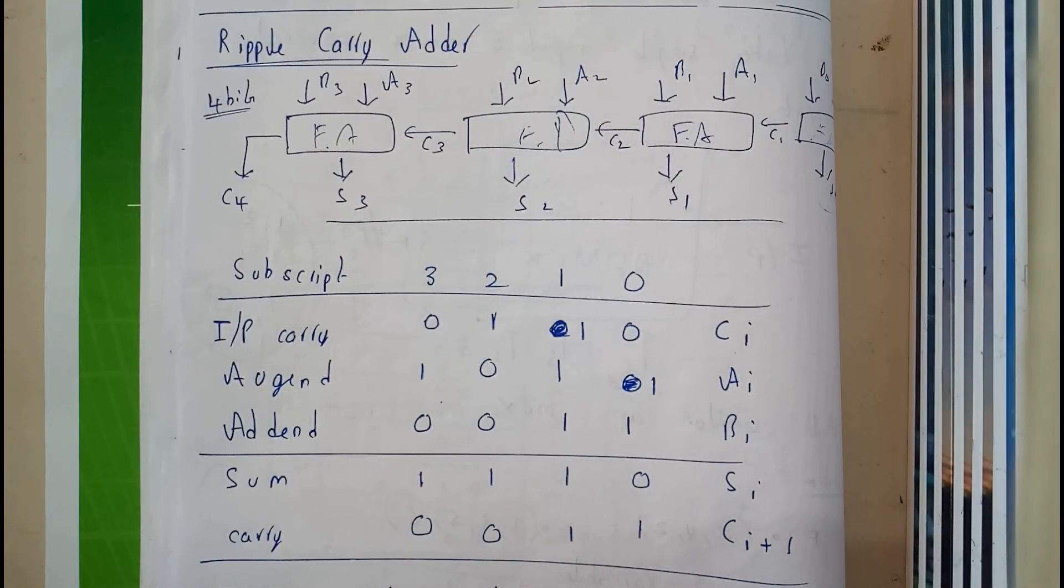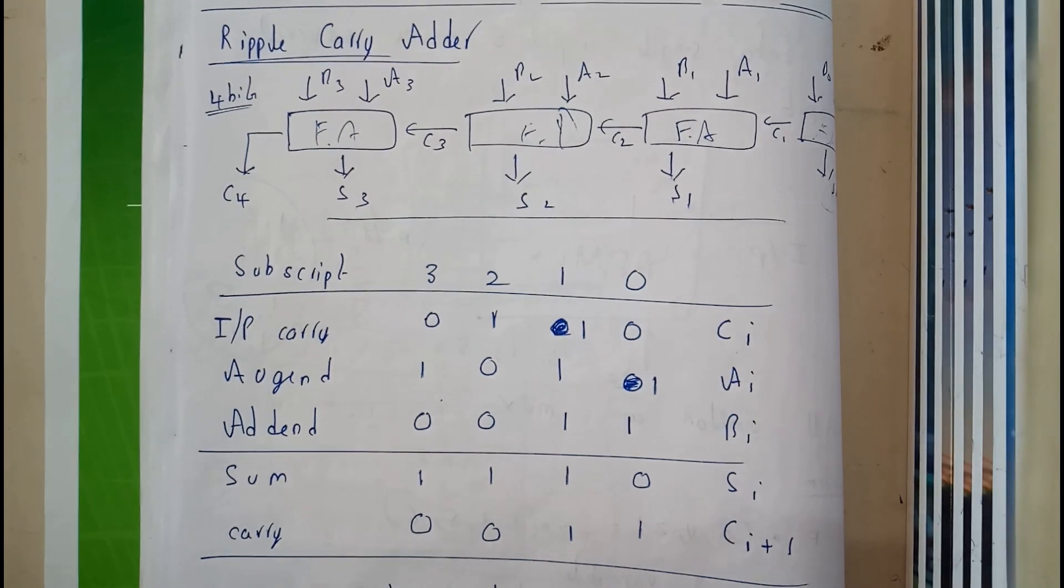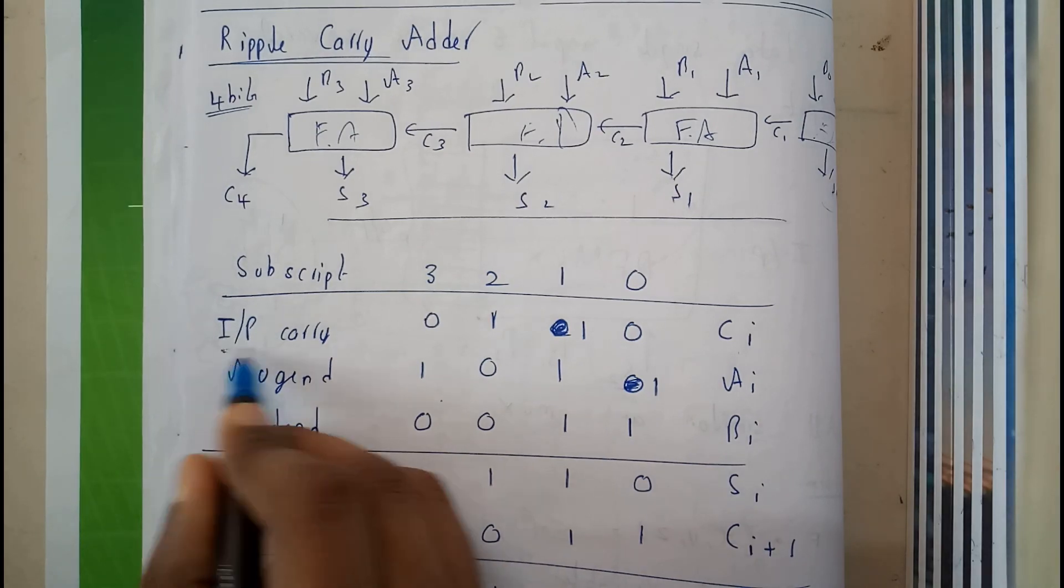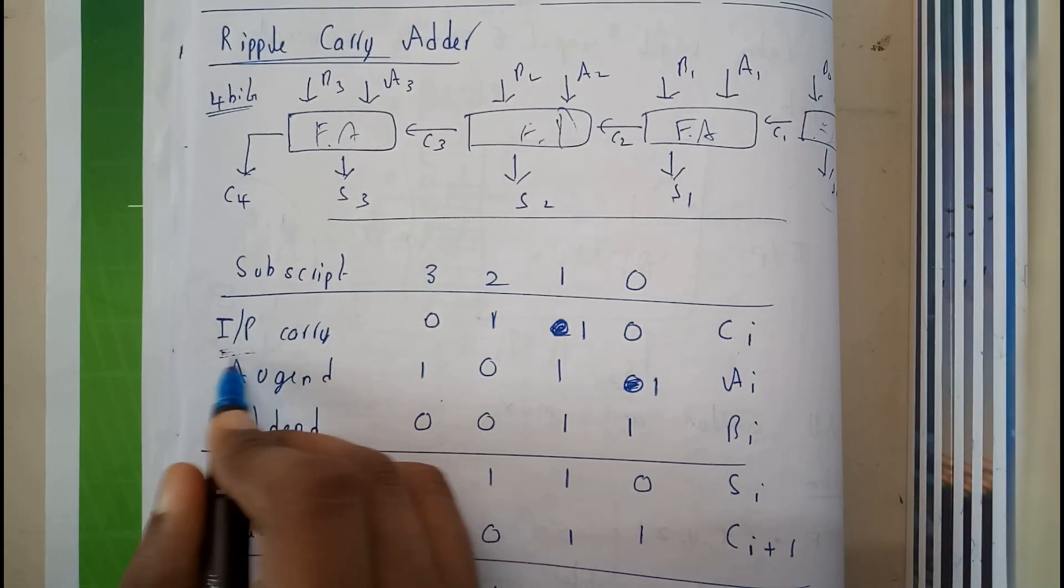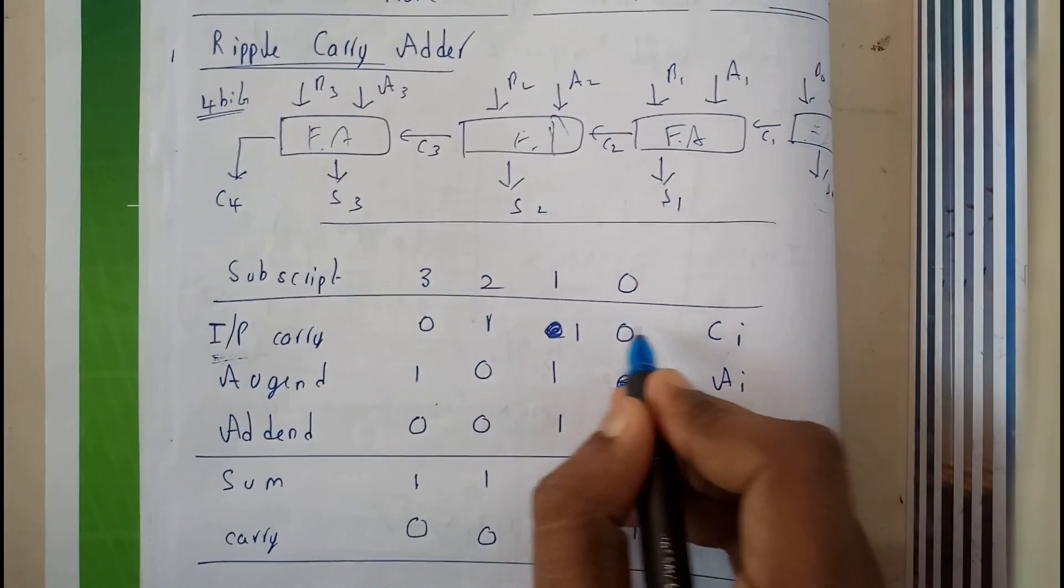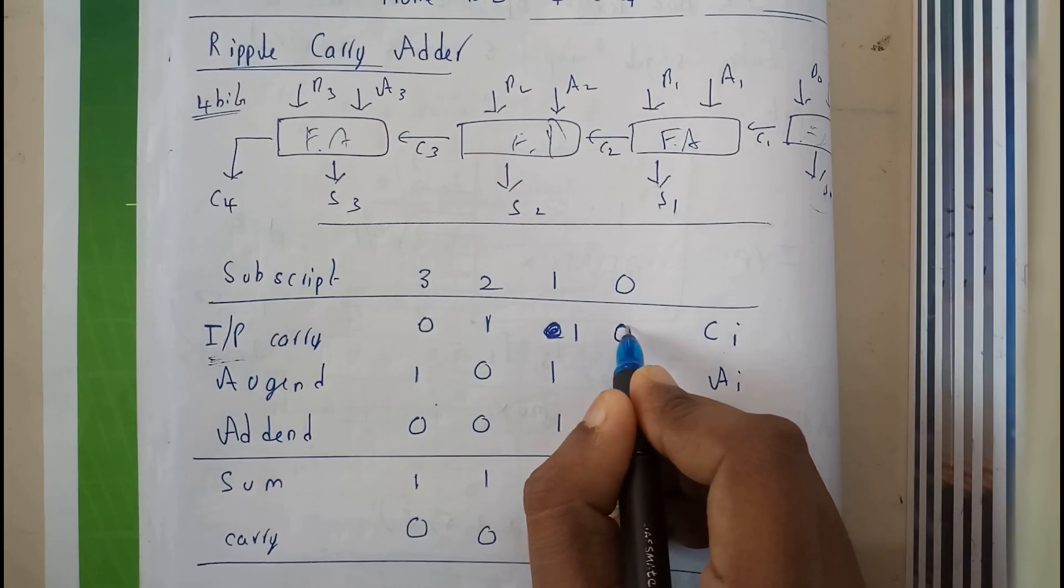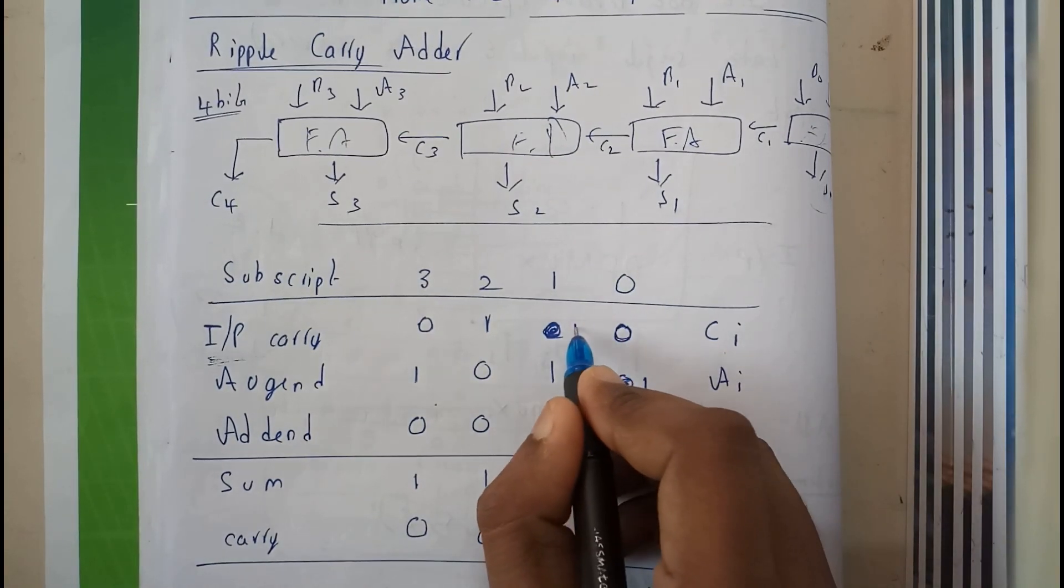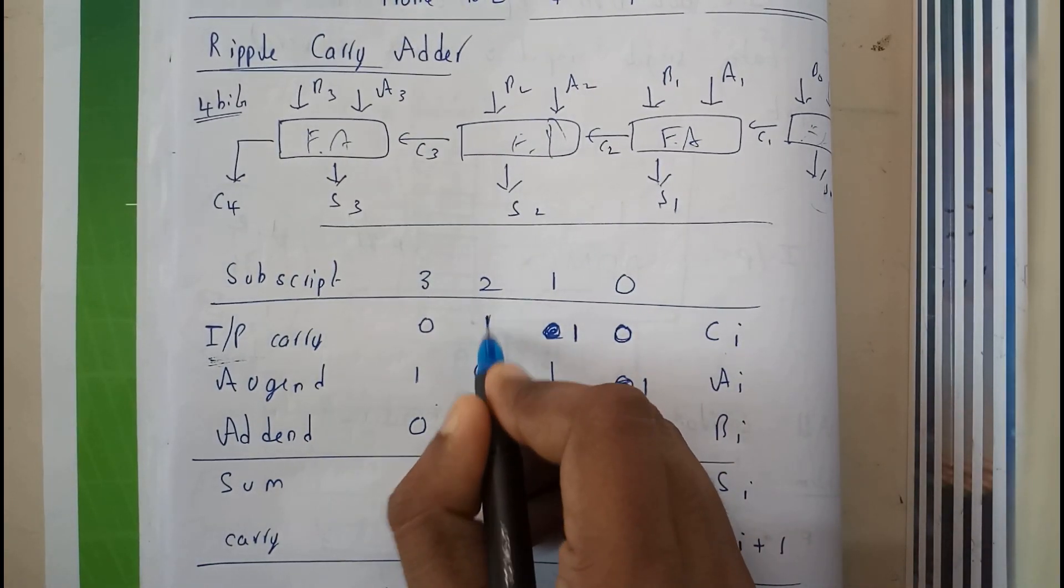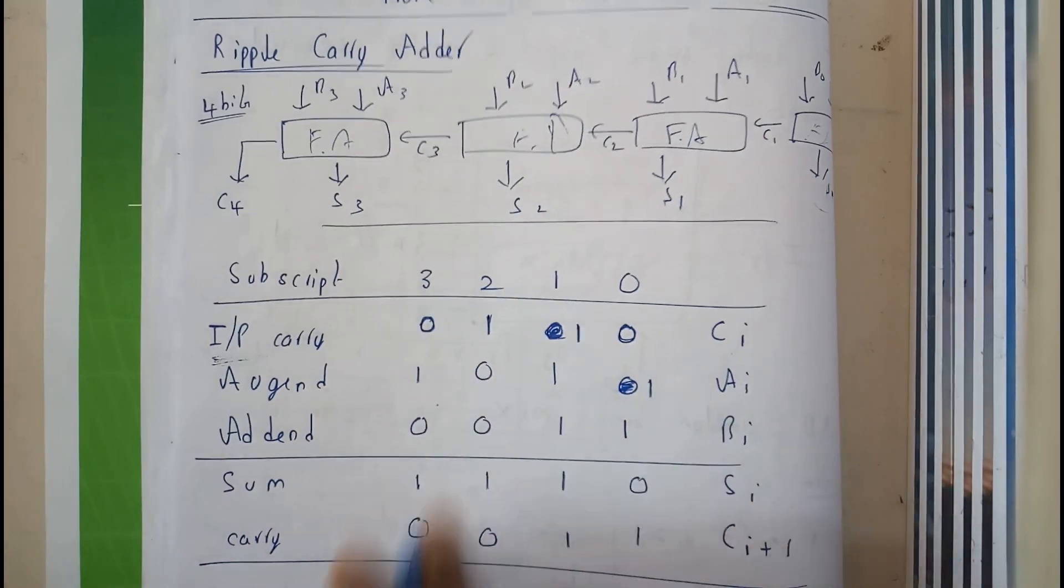So for this there is a truth table. For input carry, that's just our assumption, I will be assuming that initially for every initial condition it will be 0. After that I assumed 1, and after that also I have assumed 1, and at the last I have assumed 0.